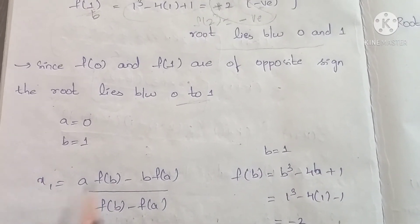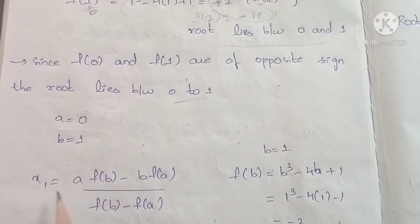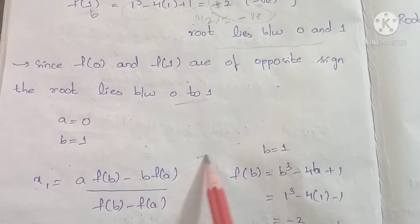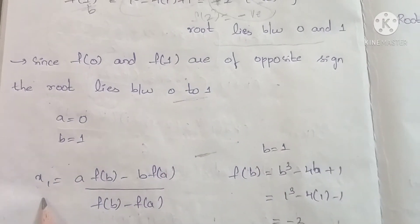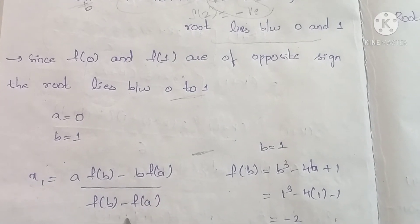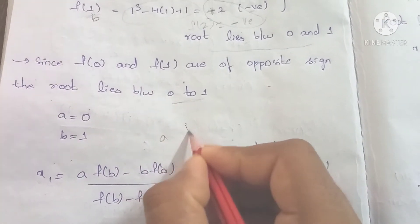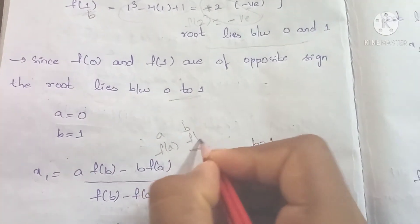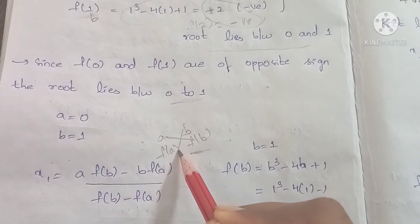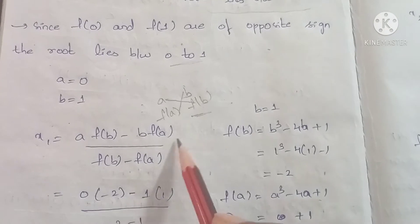Now we find x1 using the first iteration. The Regular Falsi formula is: x1 = (a × f(b) - b × f(a)) / (f(b) - f(a)). Here a = 0, b = 1, f(b) = b³ - 4b + 1 = 1³ - 4×1 + 1 = -2, and f(a) = a³ - 4a + 1.